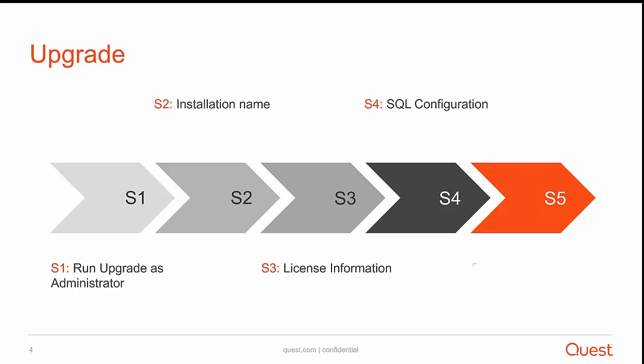The last is port information. In certain environments, you may be assigning a static port for agent and client communication. If that is the case, we have already taken the snapshot in the previous step. Please assign those static ports. Otherwise, if you have dynamic port allocation, simply enter 0.